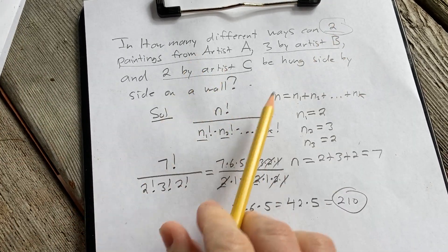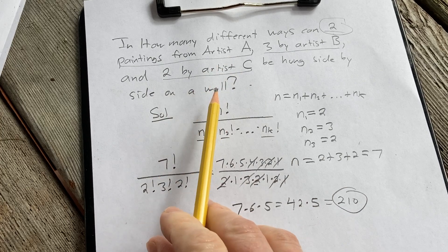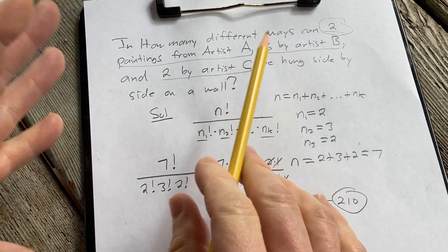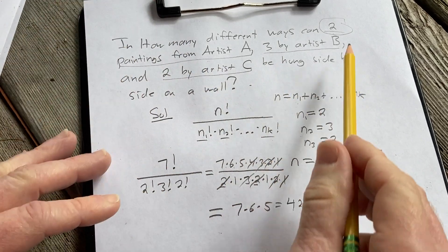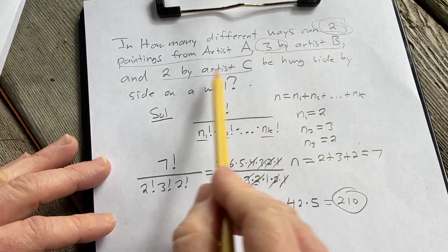Assuming you have 2 paintings from artist A, 3 from artist B, and 2 from artist C. Where we only care that the paintings come from the particular artist. We don't care that the paintings are different. So again these are identical, these are identical, these are identical.